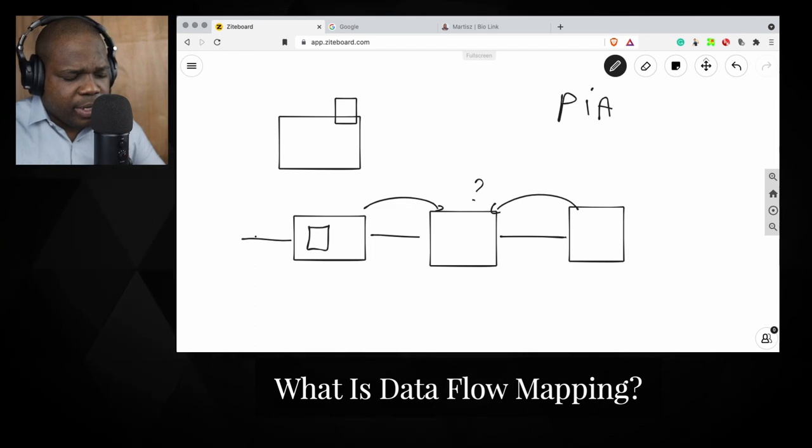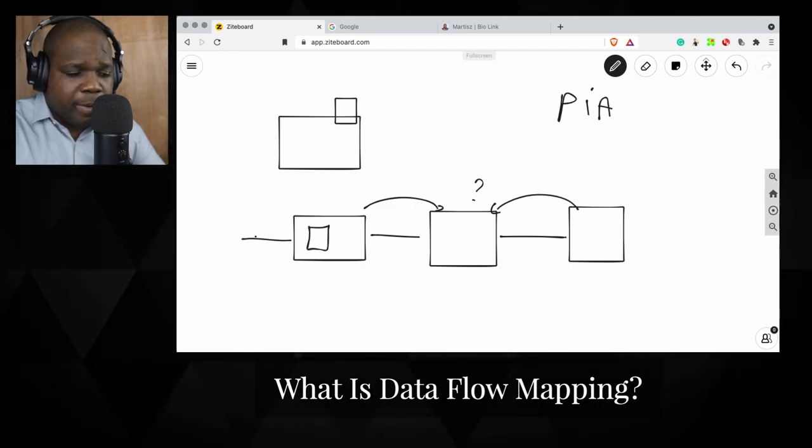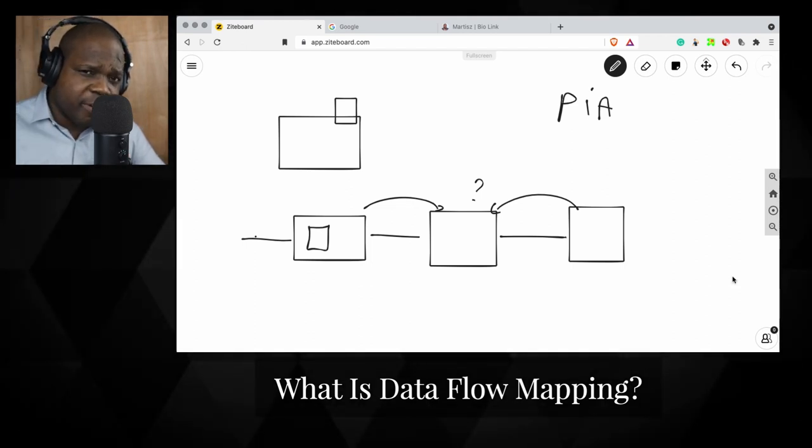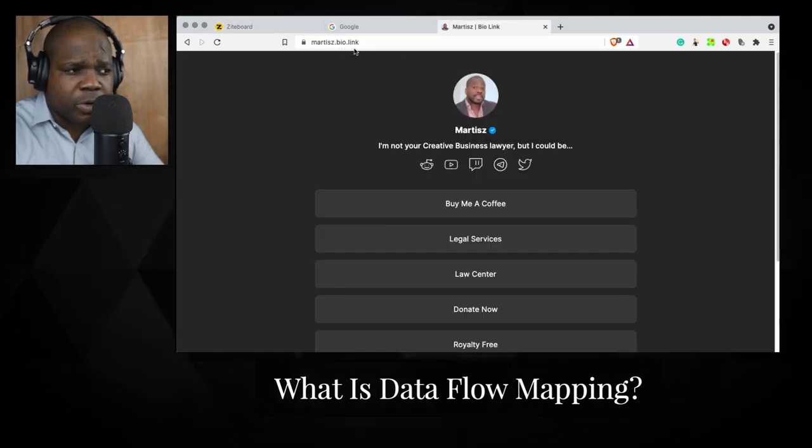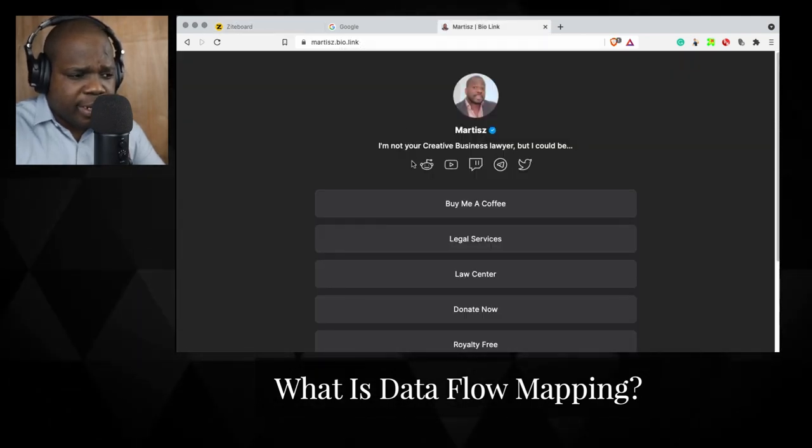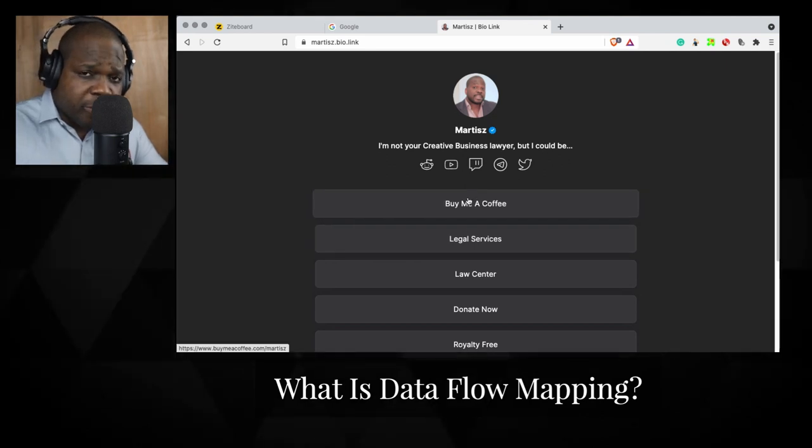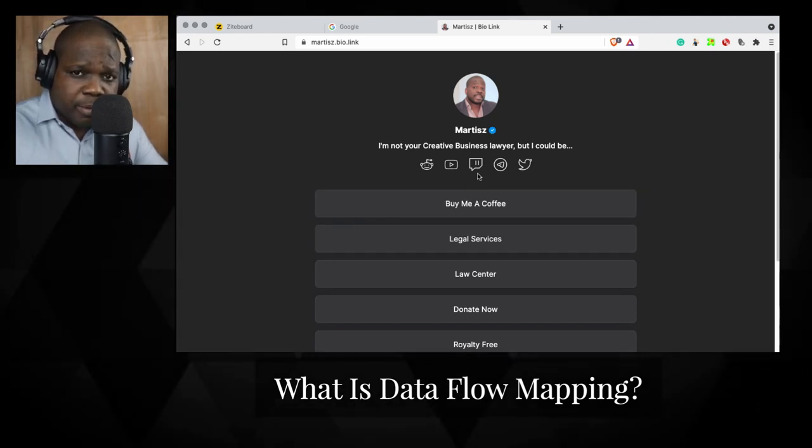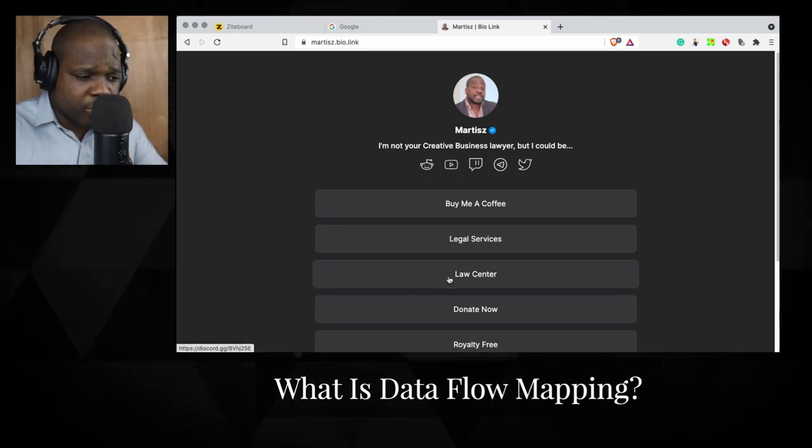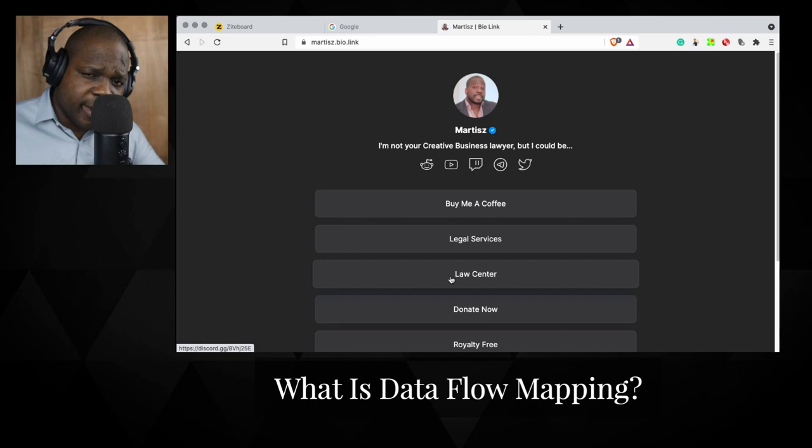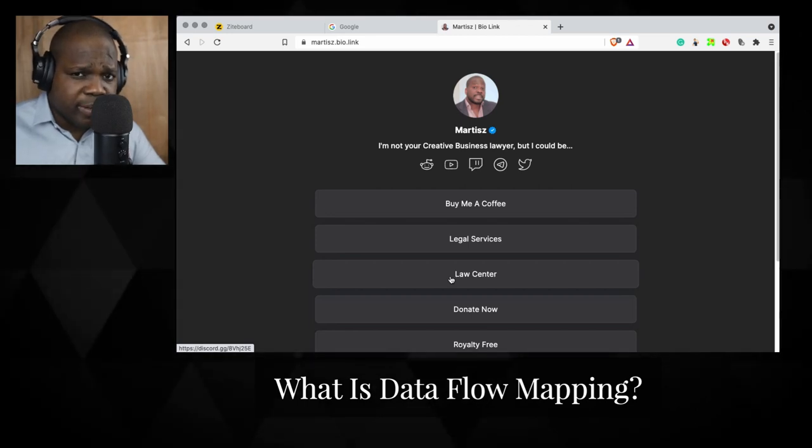So that's what is data flow mapping in a nutshell. If you have a question about it, you can just press the link in the description. Amartis.bio.link. You can buy me some coffee if you find this information relevant or you can go on a discord. You can press that join the discord and you can ask me questions directly about this.